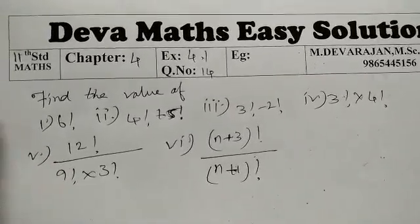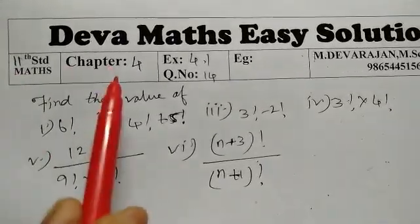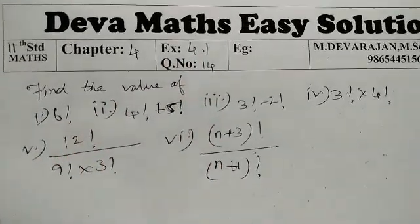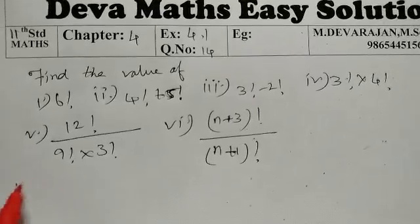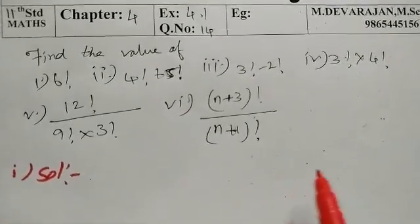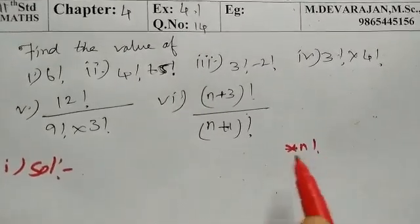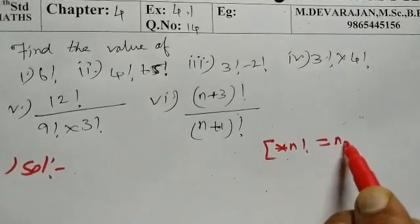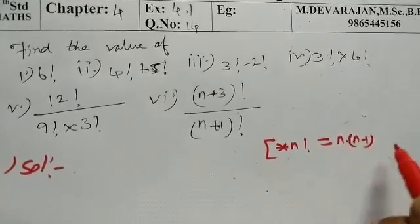Hi students, this is Deva. Now you are going to learn some math, Chapter 4, Exercise 4.1, Question number 14. Find the value of 6 factorial. Solution: Apply the n factorial formula. N factorial equals n into n minus 1 into n minus 2, and so on.